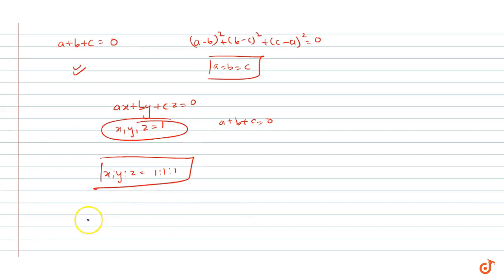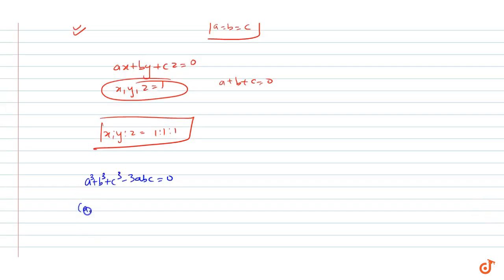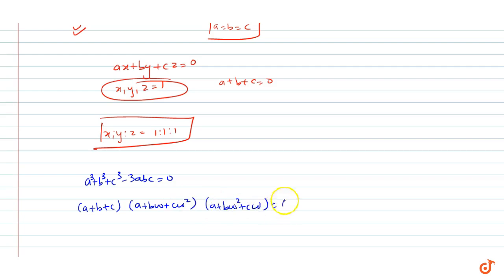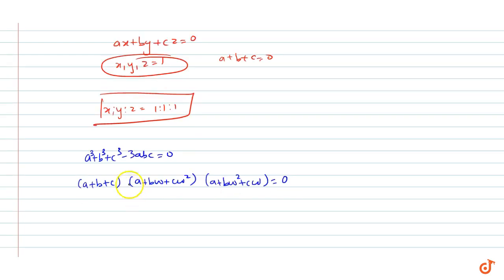अब हमें एक और formula पता है कि अगर a³ + b³ + c³ - 3abc = 0, that means: (a + b + c)(a + bω + cω²)(a + bω² + cω) = 0. तो यह 0 होगा जिसकी condition हम देख चुके हैं. अब हम अगर (a + bω + cω²) = 0 करते हैं, that is a + bω + cω² = 0.